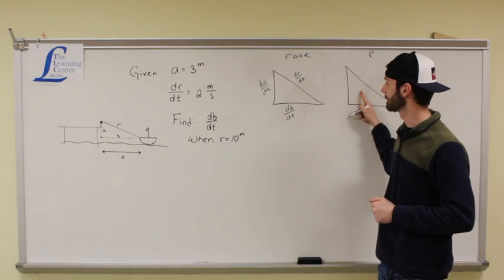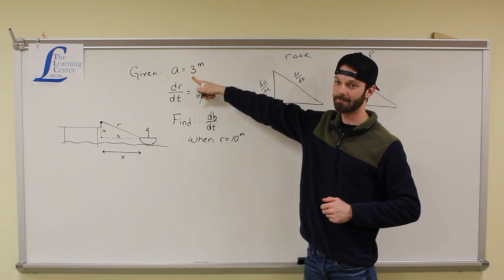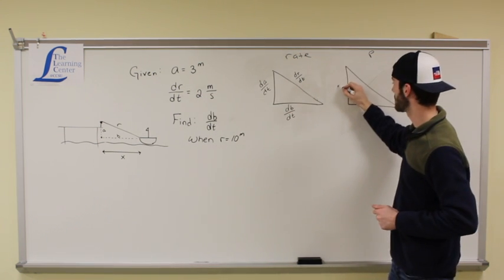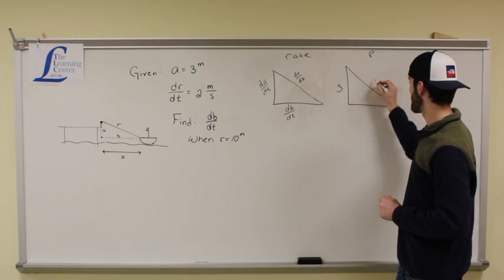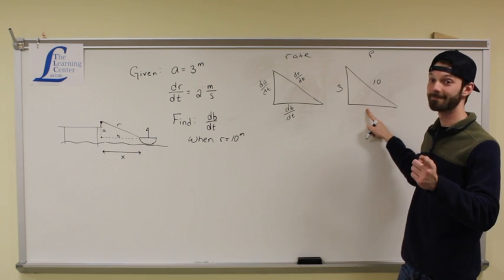Now for the position triangle, we have, so is the a side 3? The a side is 3, yes. For the position triangle. So this would be 3. And then the r side is 10. R side is 10. So how do you find this side? Pythagorean theorem.